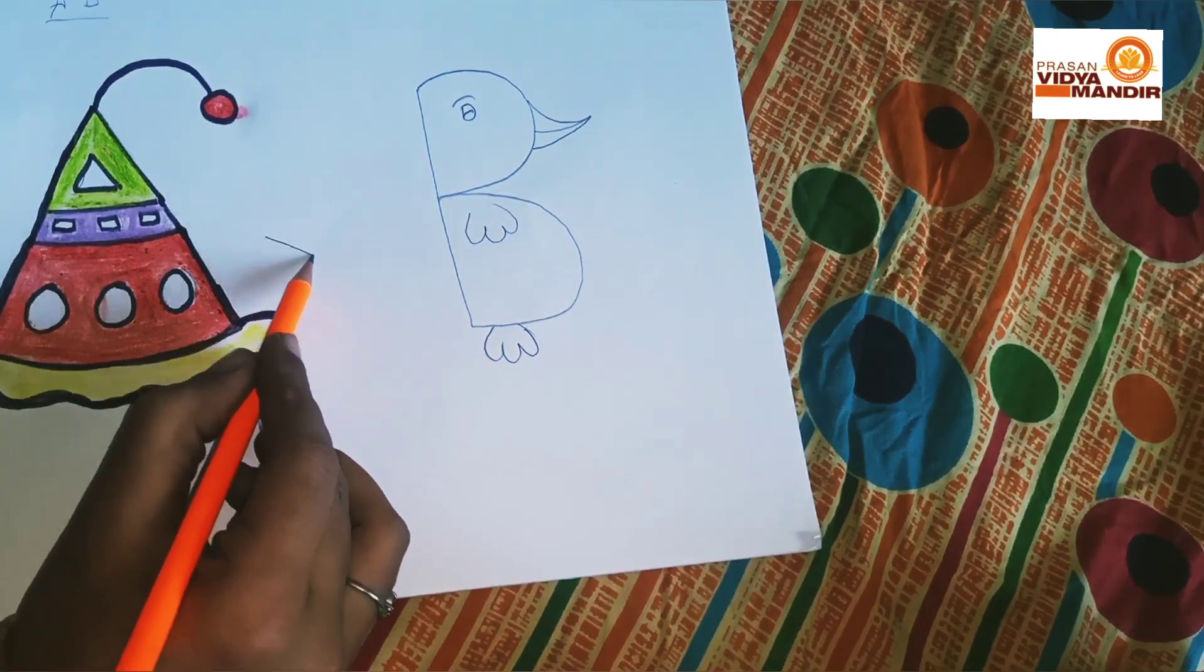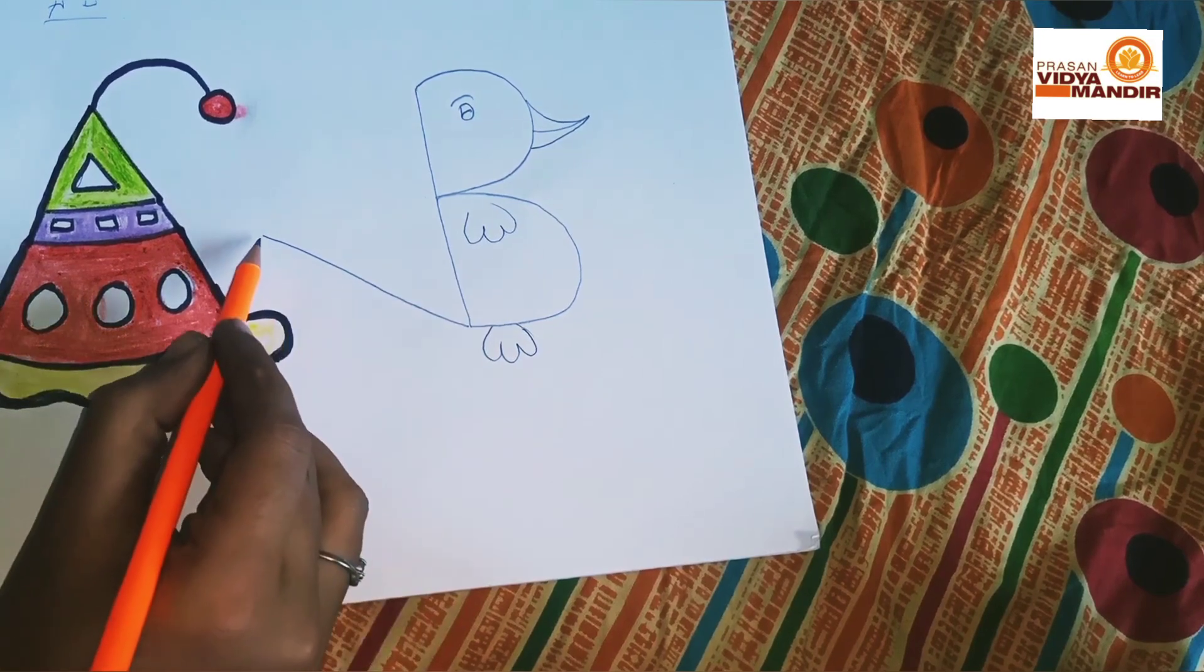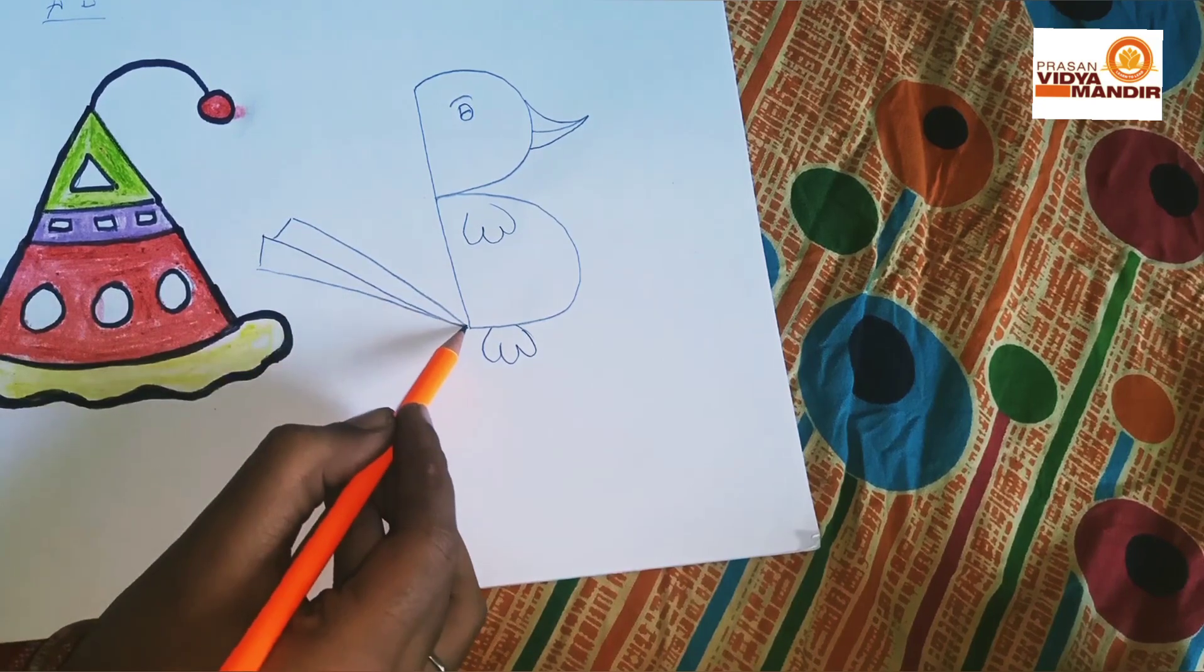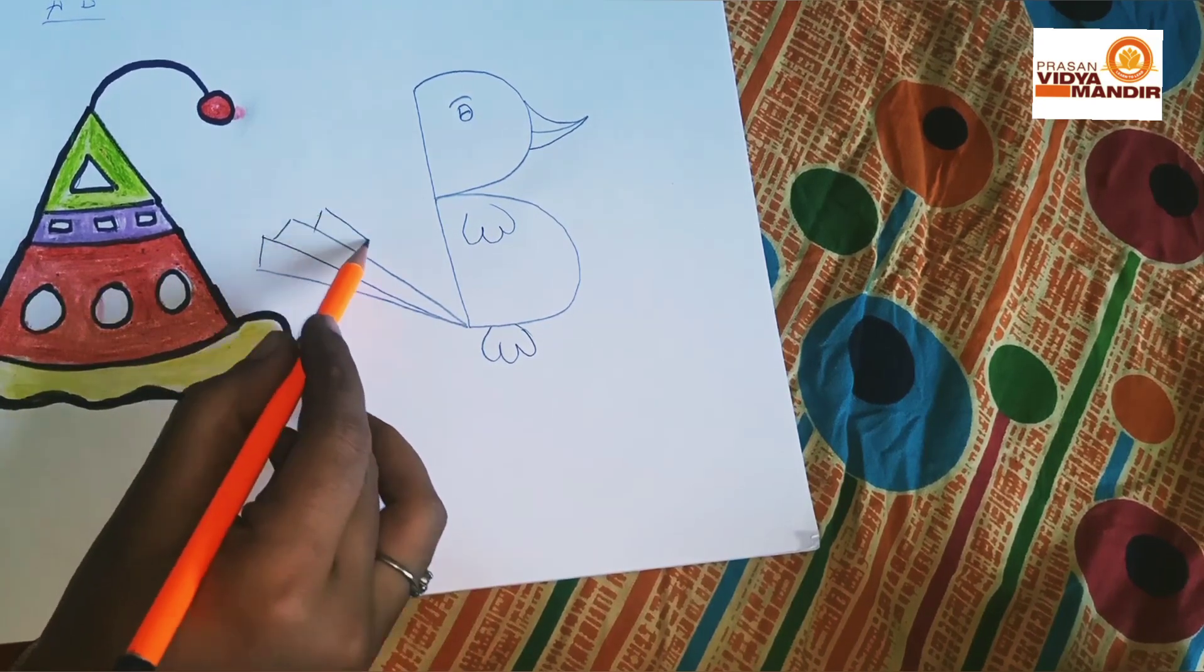Draw three slanting lines as feathers. Now your bird is ready to color.